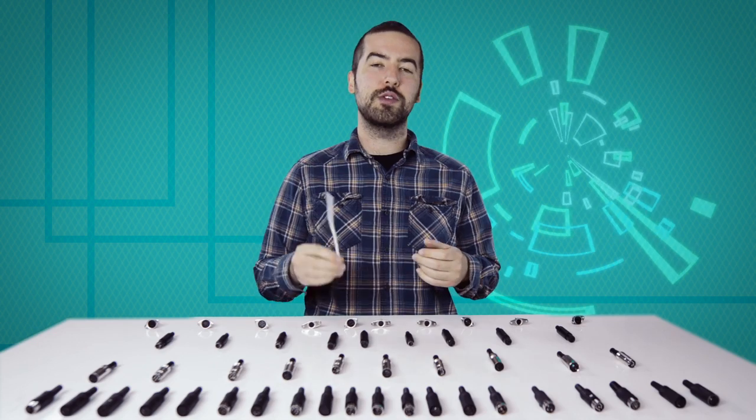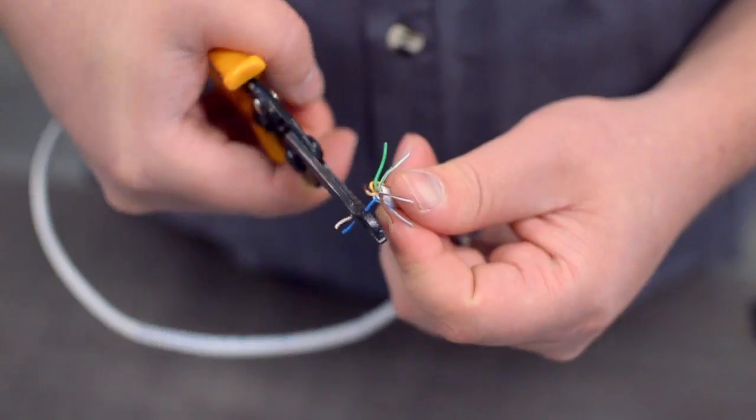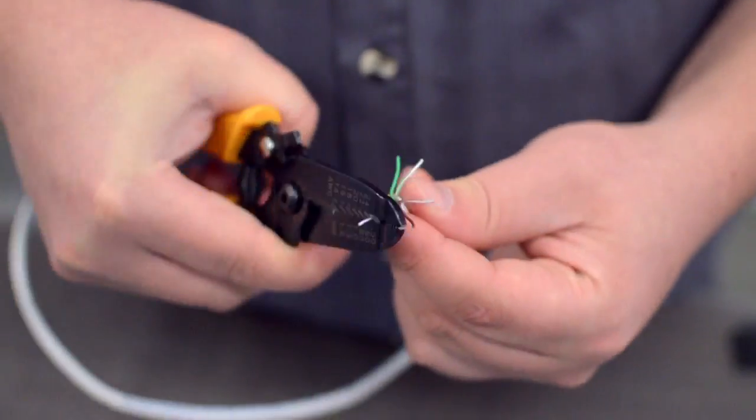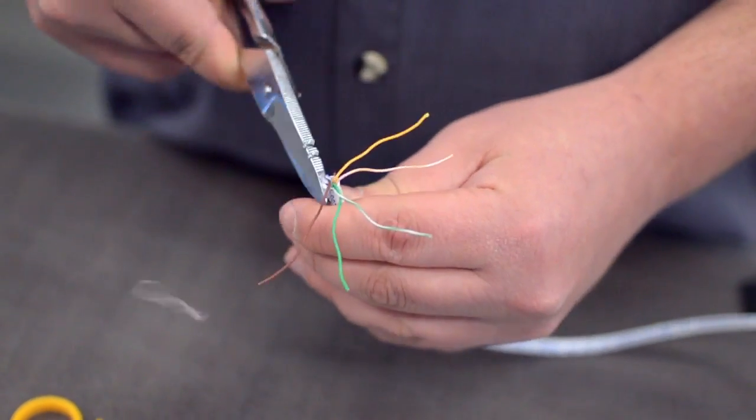For this example, we will be using CAT 5E cable. You will also need to strip the individual conductors. Trim off any additional conductors if needed.